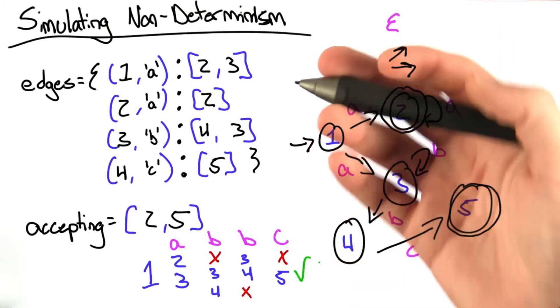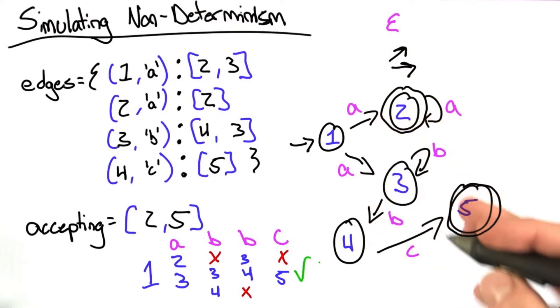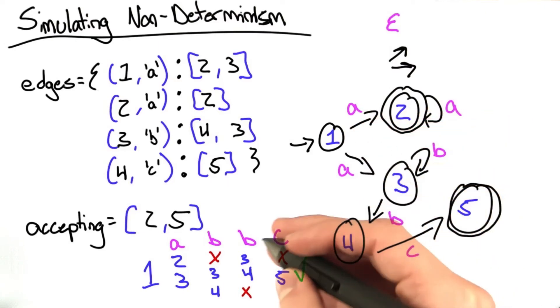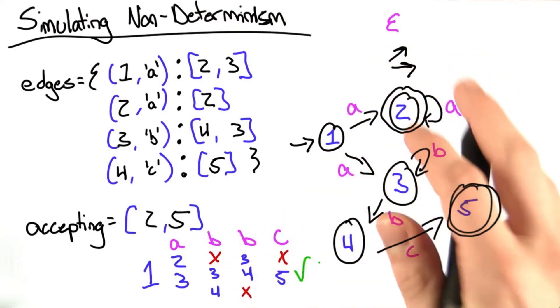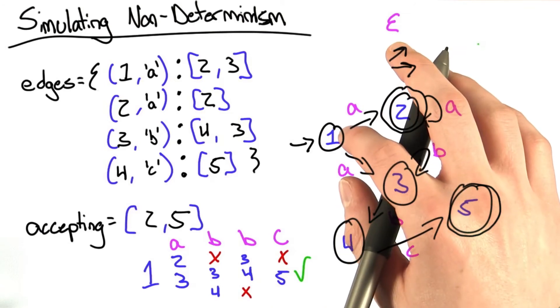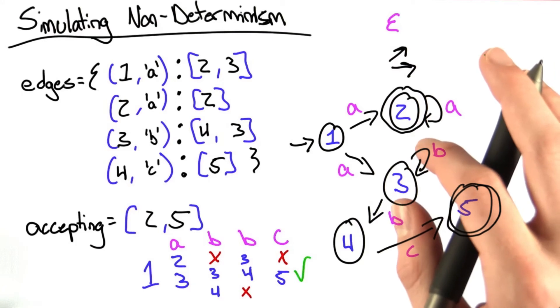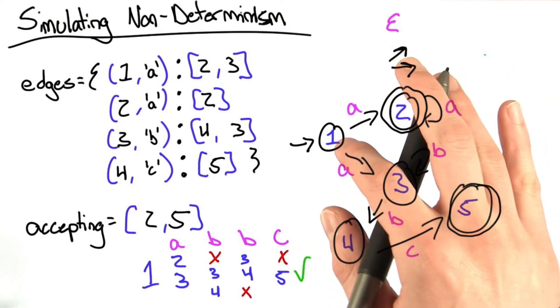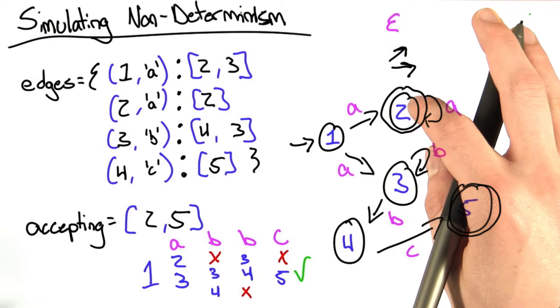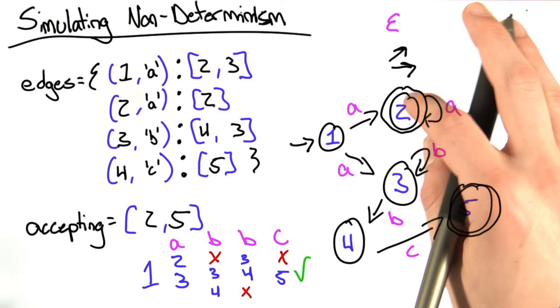Now we have to actually answer the question, and that is to simulate it. And what we're going to do is pretty much what we did by hand. We're going to do it recursively. We're going to start from the starting state, and we're going to take the first character in our string and recurse on the state that that edge leads to.